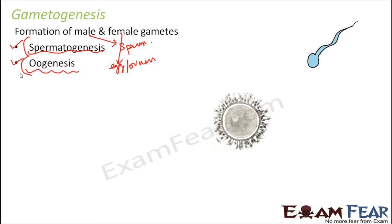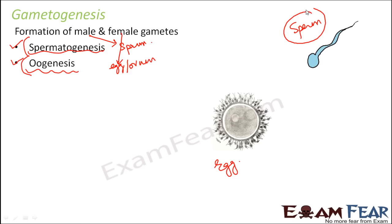This is how a sperm looks like — the tail is mostly visible, and this is the egg. We will first understand how the egg and sperm are formed, and then we will talk about the fusion of sperm and egg.